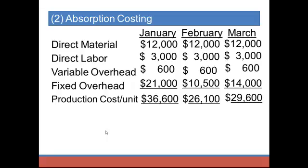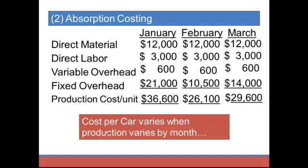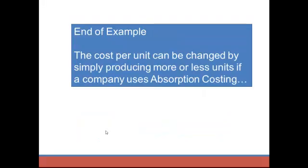The production cost per unit under absorption costing is $36,600 in January, $26,100 in February, and $29,600 in March. These numbers are used to compute cost of goods sold — in January we sold two cars at $36,600 each. The cost per car varies when production varies month to month under absorption costing, because of how fixed overhead behaves. Notice that cost per unit can be changed simply by producing more or fewer units, which can create problems for management decisions. We'll work more examples next time.